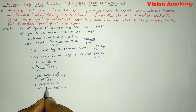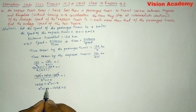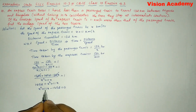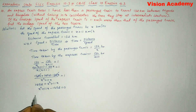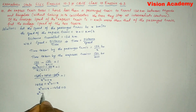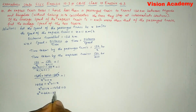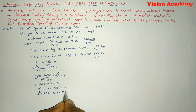Now we have to split the middle term such that the two numbers add to give plus 11 and multiply to give minus 1452. So we split: x squared plus 44x minus 33x minus 1452 equals zero. We can verify: 44 minus 33 gives us 11, and 44 multiplied by 33 gives us 1452.